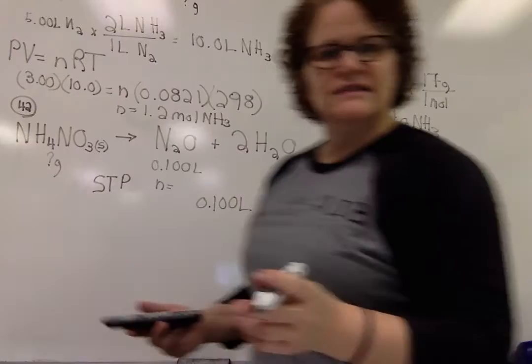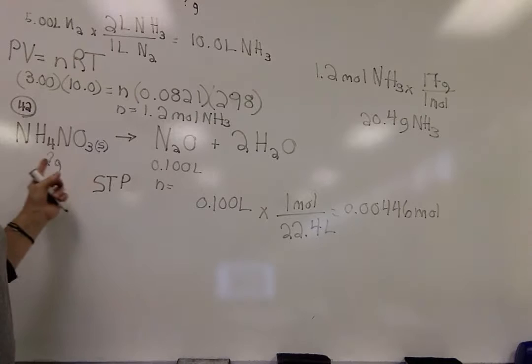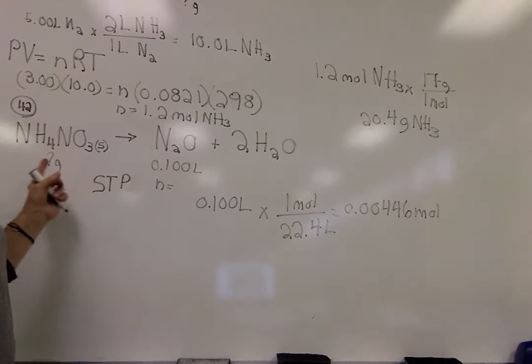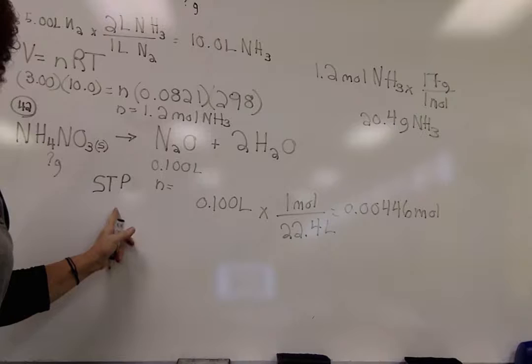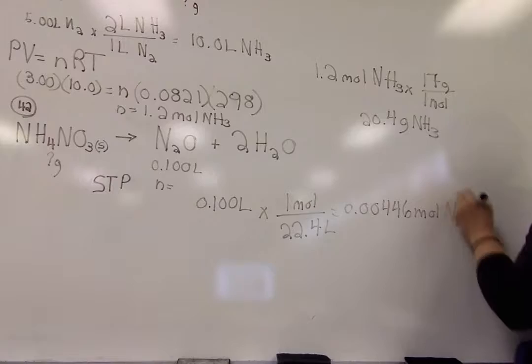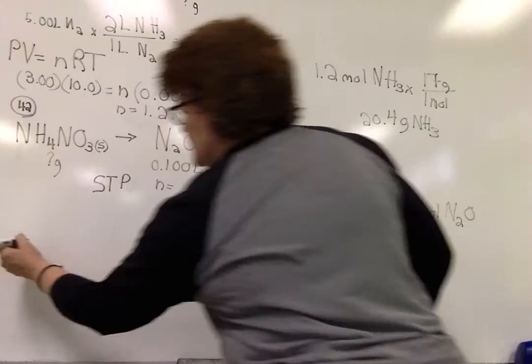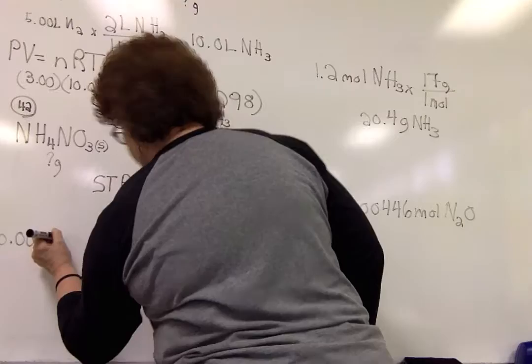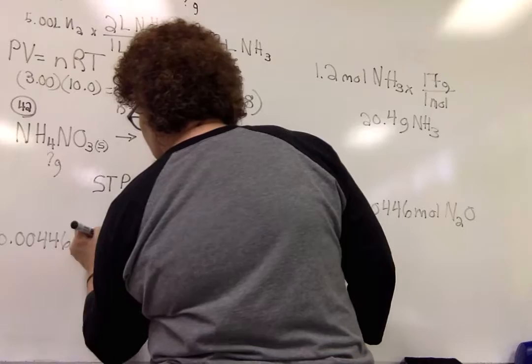Now, fun fact, you could have used the ideal gas law here as well. You would have just put in—since it was STP, you would have put in 1 for the pressure, 273 for the temperature, and you could have solved it with PV equals NRT and found the number of moles. But now that we have the number of moles of N2O, now we can just do straight stoichiometry, right? So we're going to go over here. So we'll do 0.0044—what was it, 446? 6 moles of N2O,